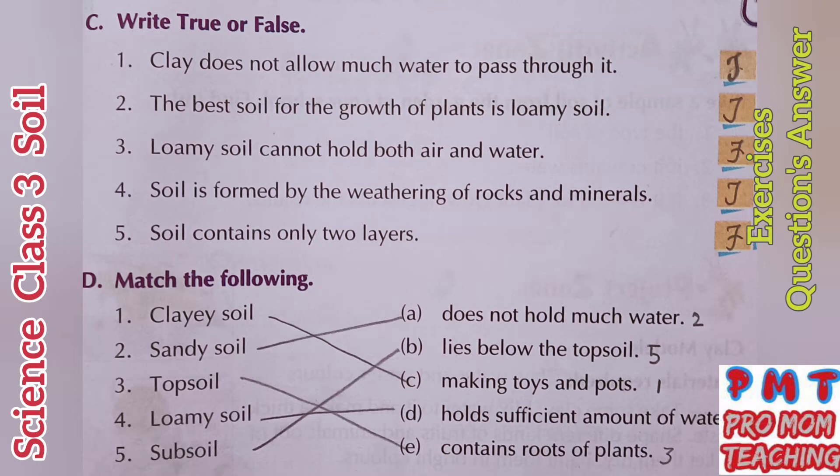Fourth: soil is formed by the weathering of rocks and minerals — true. Fifth: soil contains only two layers — false, because soil has three layers: topsoil, subsoil and bedrock.